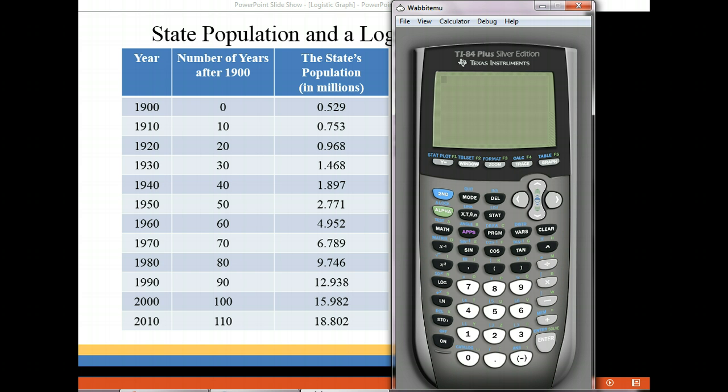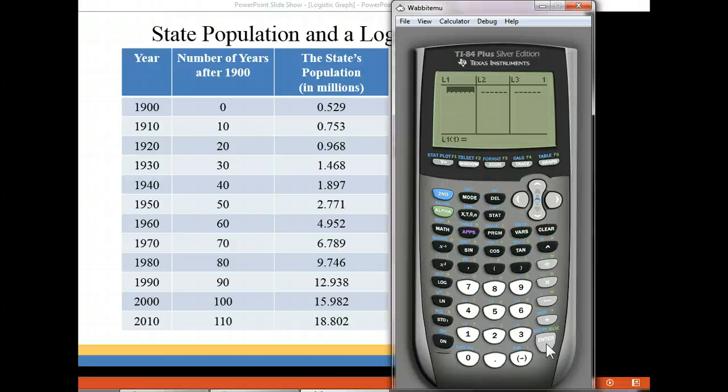What we're going to do is enter that information in our graphing calculator. We're going to enter the years after 1900, so that would be our second column, and our state's population will be our y value. So in order to do this we're going to use the stat key. Click on your stat key here and under the stat key we're going to choose edit. And then in L1 we're going to enter the number of years after 1900. If you have data in L1 and you want to clear it out, just use your up arrow key to highlight L1 and then use clear and enter. You can do the same thing for all the other columns, but we're only going to be using L1 and L2 so you need to make sure they're cleared out first.